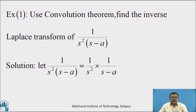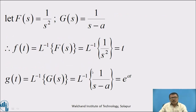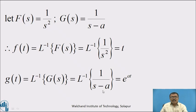Example: Use the Convolution Theorem to find the inverse Laplace transform of 1/(s²·(s−a)). Solution: 1/(s²·(s−a)) can be split as the product of two functions: 1/s² and 1/(s−a). Let F(s) = 1/s² and G(s) = 1/(s−a). Now find f(t) and g(t): f(t) = L⁻¹{1/s²} = t, and g(t) = L⁻¹{1/(s−a)} = e^(at).